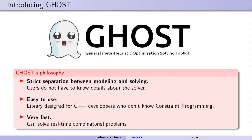GHOST philosophy has three main points. The first point is GHOST has a strict separation between modeling and solving — you, the user, will just have to model the problem without knowing exactly how the solver works. It's easy to use; it's a C++ library designed for developers who don't necessarily know constraint programming. And it's very fast, aimed to solve real-time combinatorial problems within a couple of milliseconds or more.